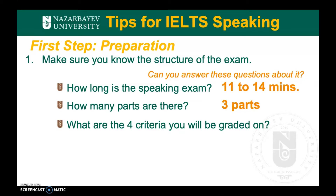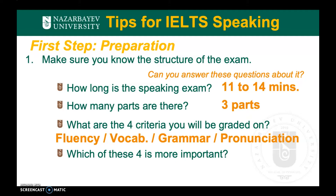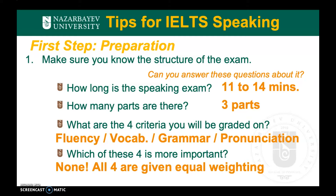What are the four criteria that you will be graded on? They are: fluency — how well you speak; vocabulary — looking at the range and accuracy of your words; grammar — looking at the range of grammar structures you use as well as accuracy; and your pronunciation. And which of these four criteria is more important? Well, none of them. They are all given exactly equal weighting.